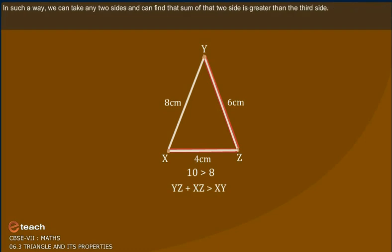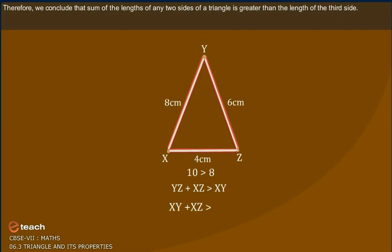In such a way, we can take any two sides and find that the sum of those two sides is greater than the third side. Therefore, we conclude that the sum of the lengths of any two sides of a triangle is greater than the length of the third side.